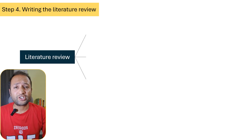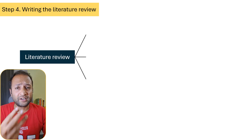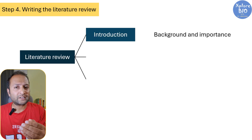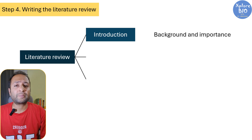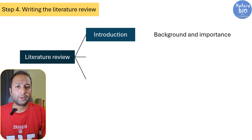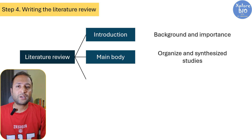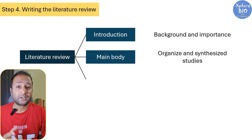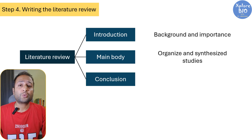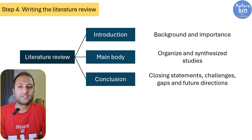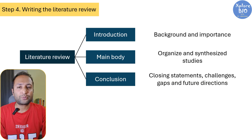Once your notes are ready, the writing part is much easier. A basic literature review usually has three parts: Introduction, where you set the background and explain why the topic is important; Main Body, where you organize the studies by themes, methods or chronology; and Conclusion, where you provide the closing statement, highlight the challenges and point out the gaps or future directions.